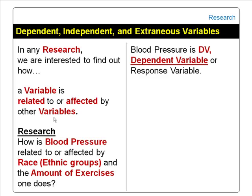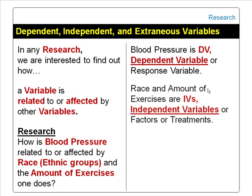In this example, blood pressure is the dependent variable. The dependent variable is also called the response variable. Race and amount of exercises are the independent variables. They are also called factors or treatments.